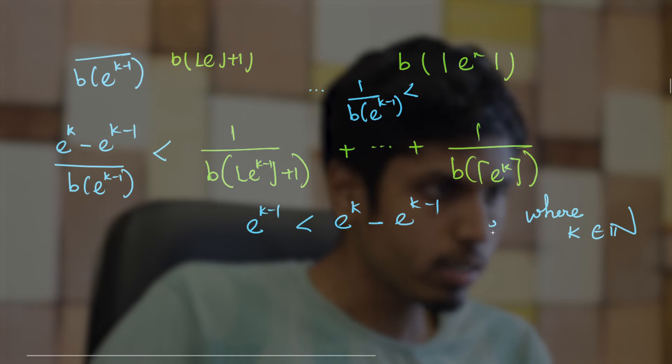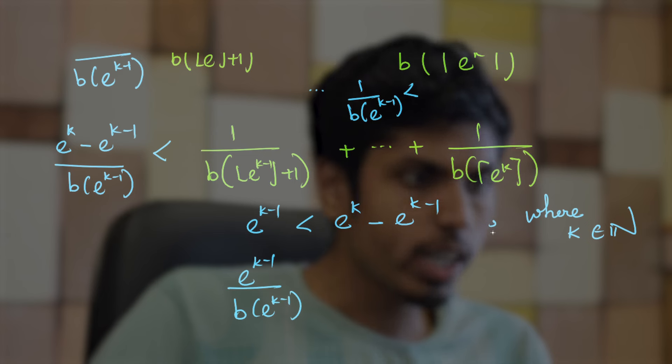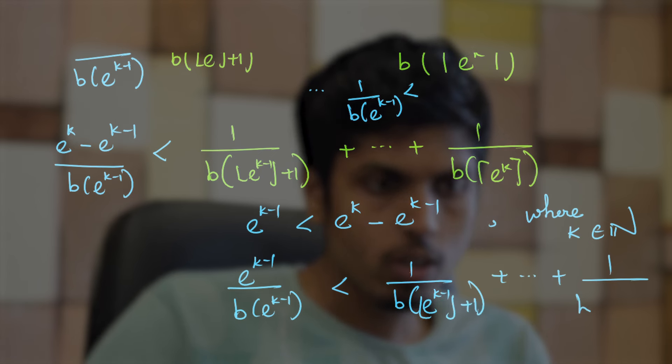Now, if you divide this by b(e^(k-1)), you would get (e^(k-1))/b(e^(k-1)) to be less than 1/b(⌊e^(k-1)⌋ + 1) all the way till 1/b(⌈e^k⌉).